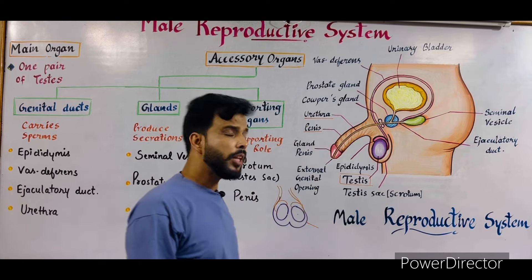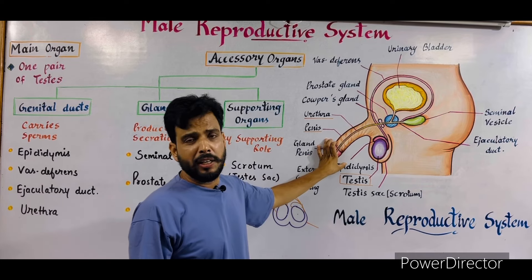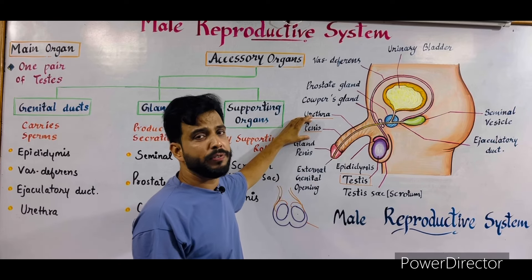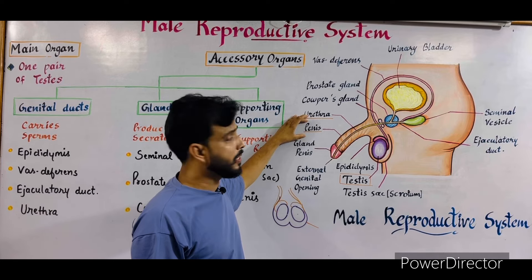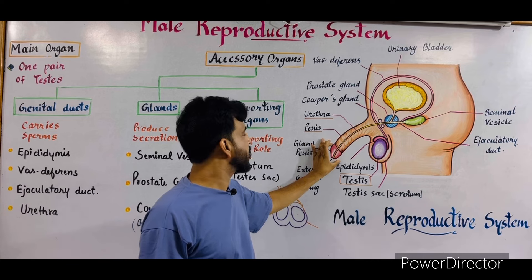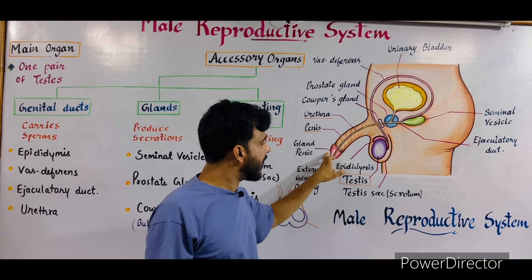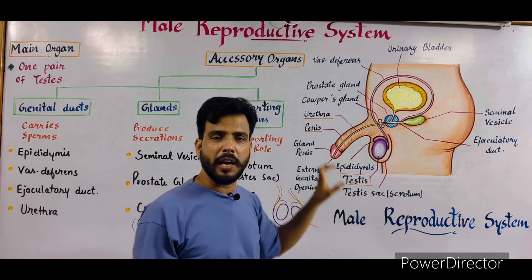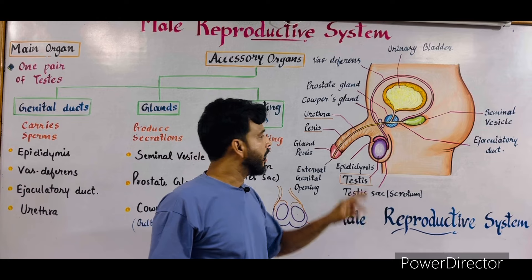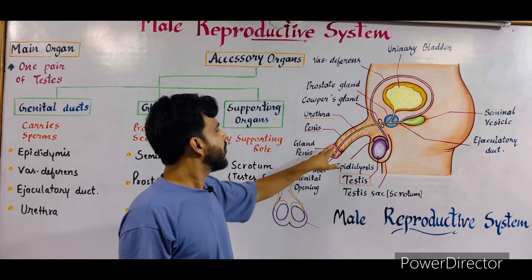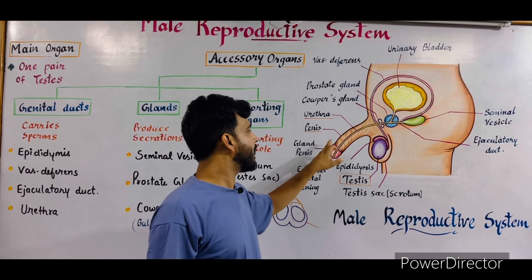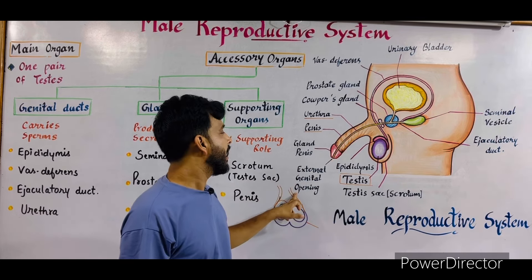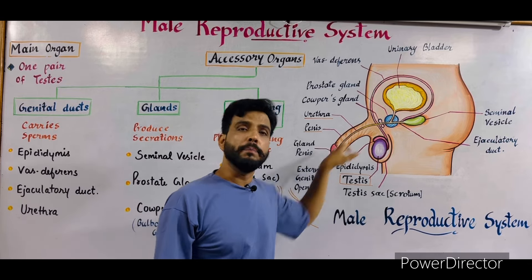The urethra passes through an erectile cylindrical organ called the penis, which helps in the process of sexual intercourse. The penis consists of three main parts: the root, the body, and the upper solemn part known as the glans penis. The glans penis is covered by a skin fold known as the prepuce. At the tip of the glans penis, an opening is present called the external genital opening, through which both urine and semen pass out.